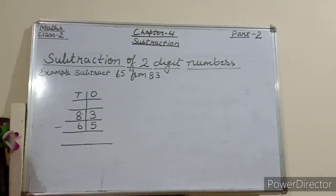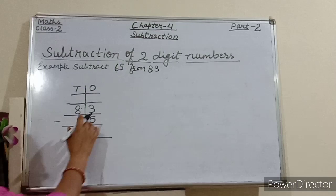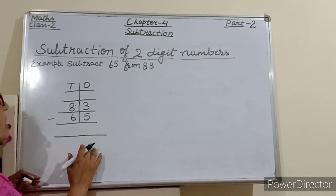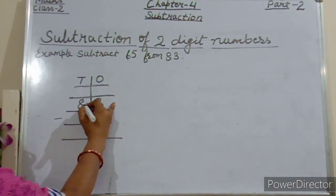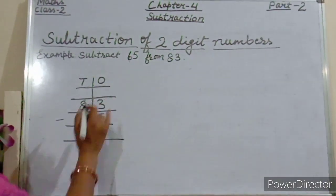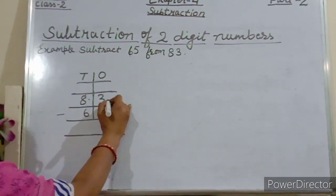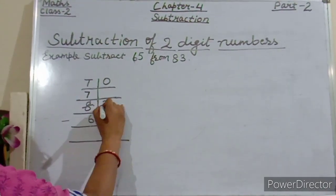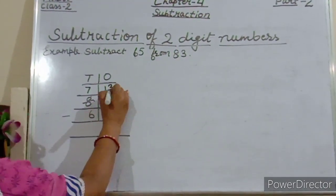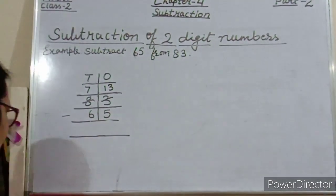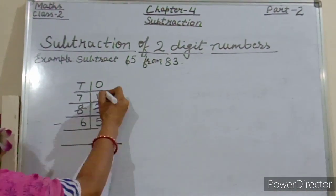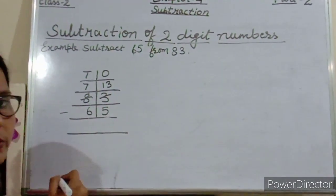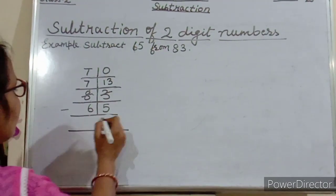Now subtract this. So is it possible to subtract 5 from 3? No. So what will we do? We will borrow from 8 tens. So regroup 8 tens and 3 ones as 7 tens and 13 ones. Now subtract 5 ones from 13 ones. So 13 minus 5 is equals to 8.